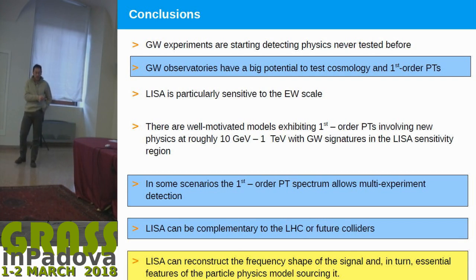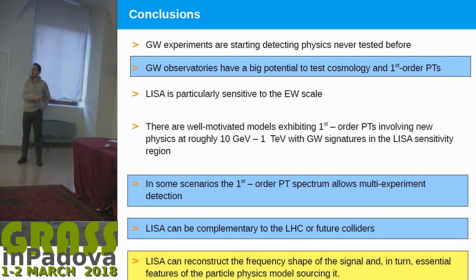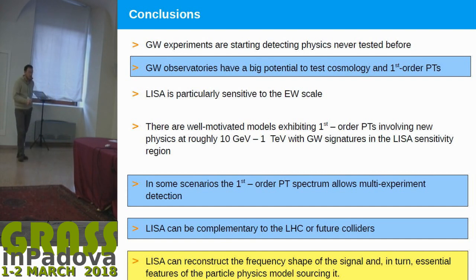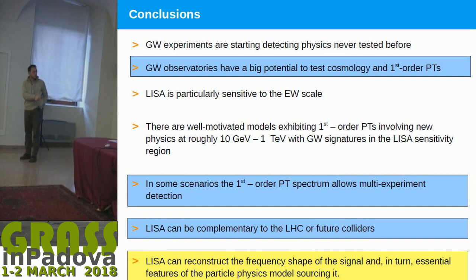LISA is particularly sensitive to the electroweak scale, and we have well-motivated models that produce this signal because, as I said, you need physics beyond the standard model. In particular, since you have a broken power law, you have multi-band cosmology — or particle physics — because the signal can in some cases be probed by more than one detector at the same time. Finally, it is possible to test and reconstruct the signal with some accuracy.